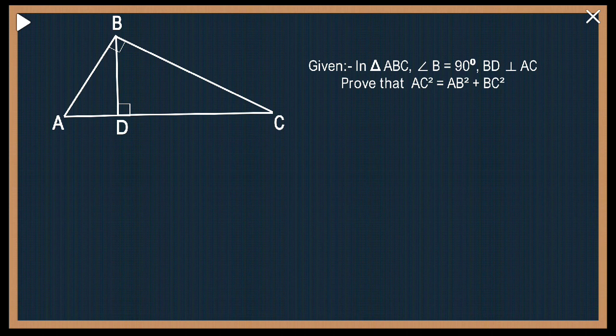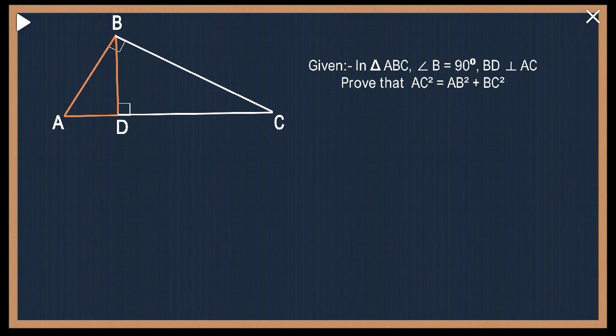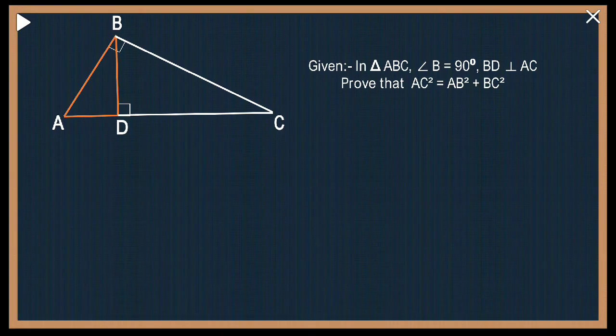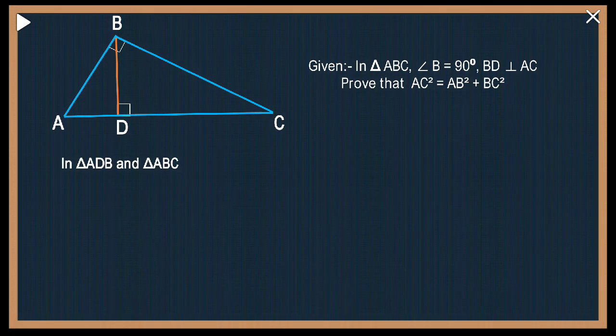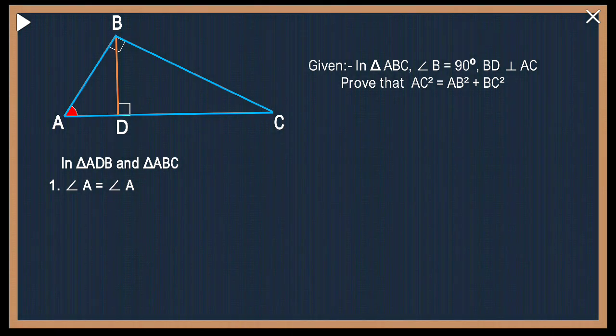So in the first case, what we are supposed to do is we will consider this triangle ADB, the orange triangle, and triangle ABC. So I have considered, remember them, I will write it down also for you. So in triangle ADB and ABC. Now in these two triangles, if you notice, A is a common point, which means angle A is common for both these triangles. So I can write angle A equals angle A. What will be the reason? Same angle.